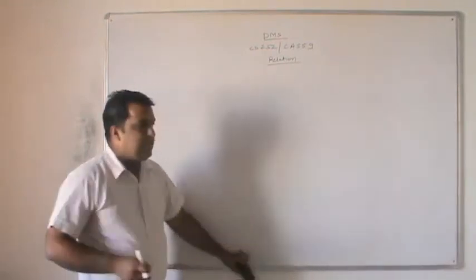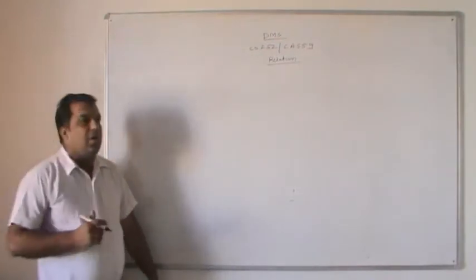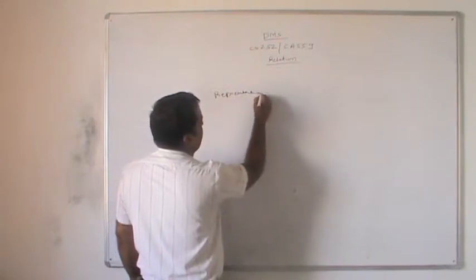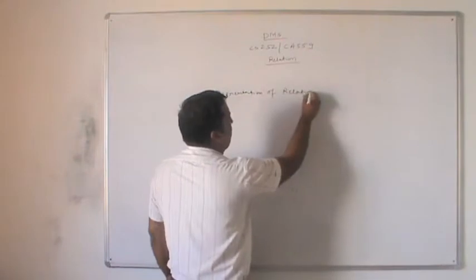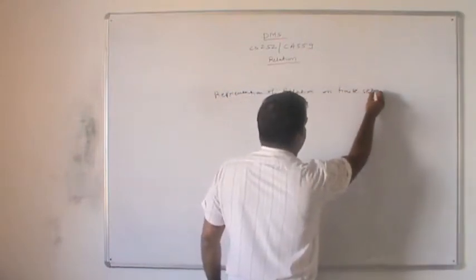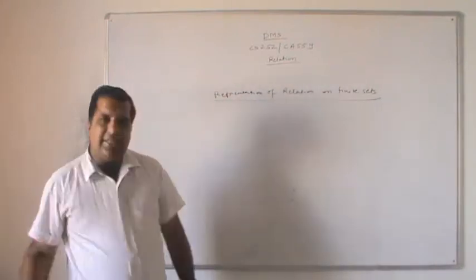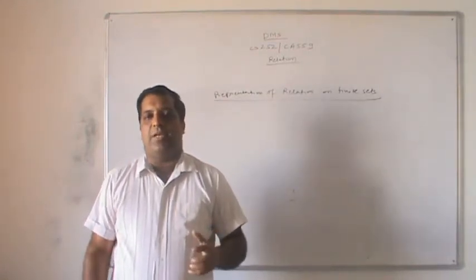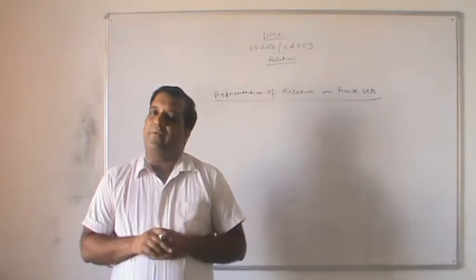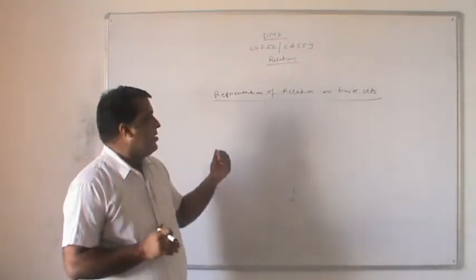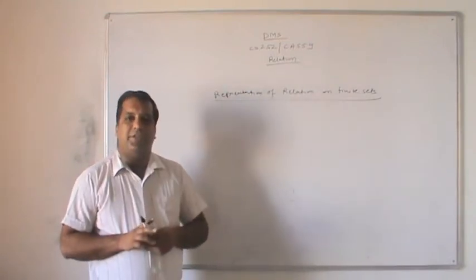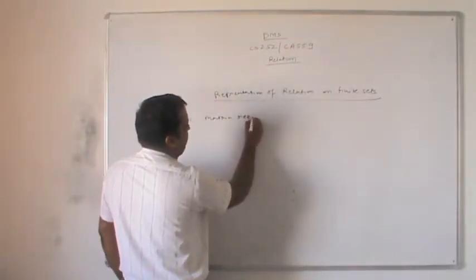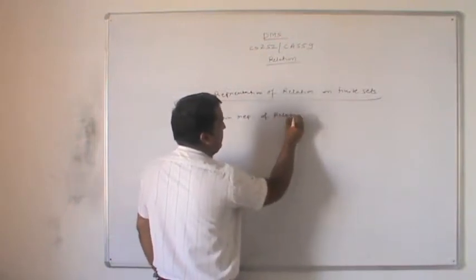Next, we can discuss the representation of a relation on a finite set. The relation can be represented in two ways: one is the matrix representation, and another is the arrow diagram representation.